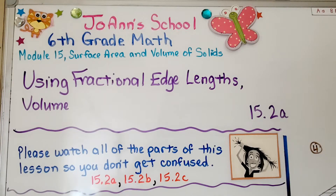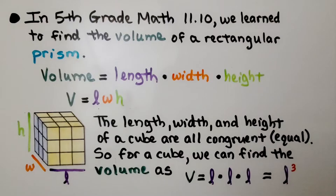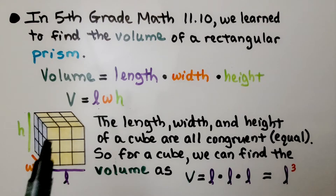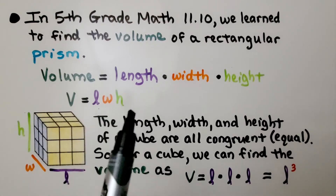Lesson 15.2a: Using Fractional Edge Lengths, Volume. Last year in 5th grade math, lesson 11.10, we learned to find the volume of a rectangular prism. The volume is equal to the length times the width times the height, and the volume formula is V equals LWH.